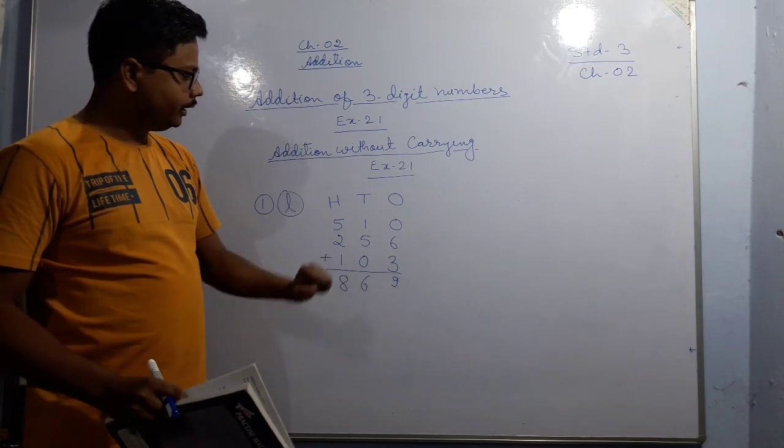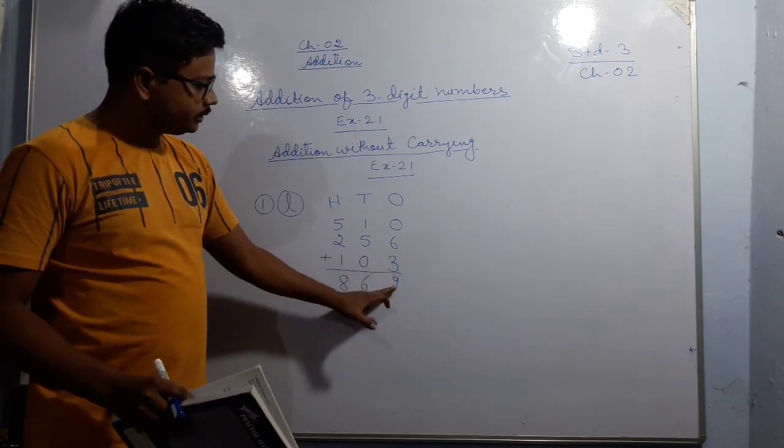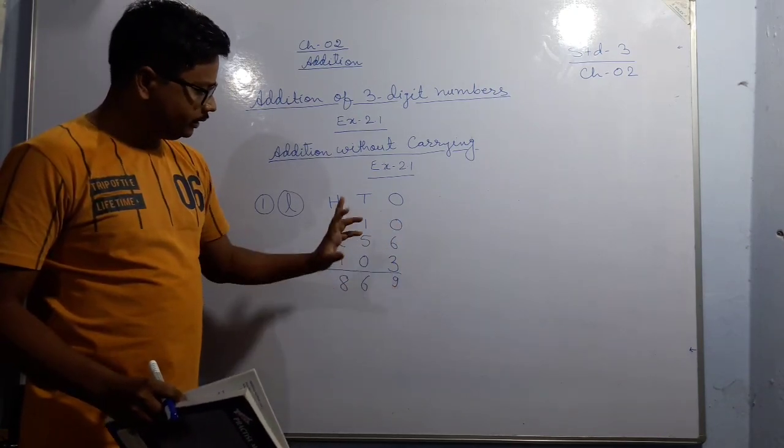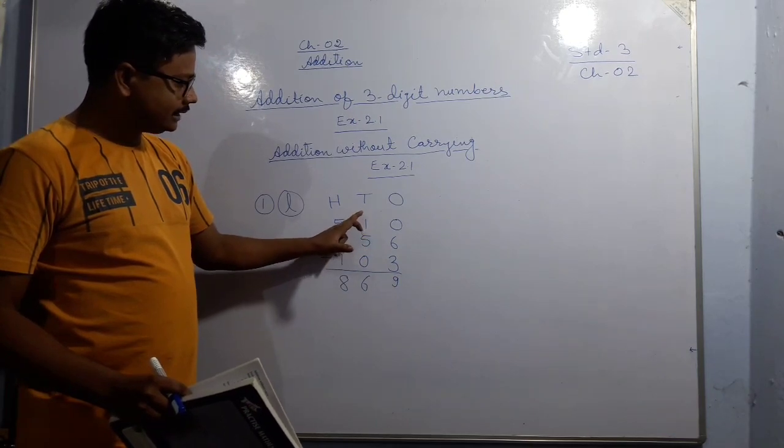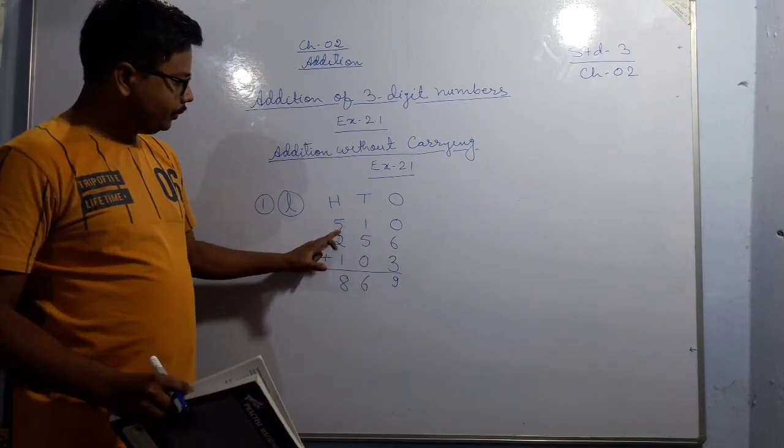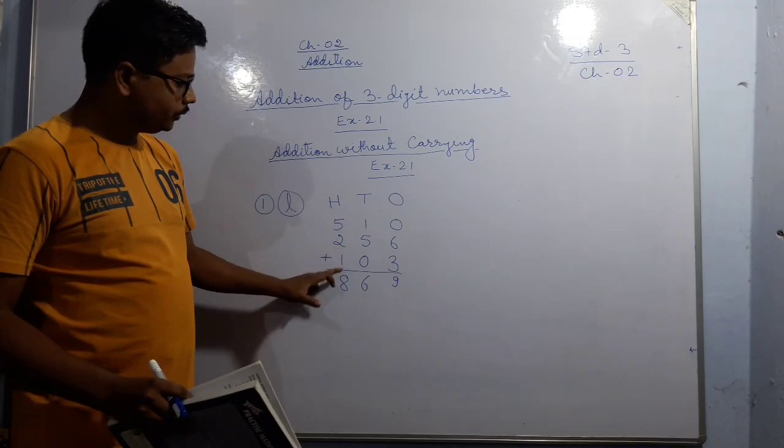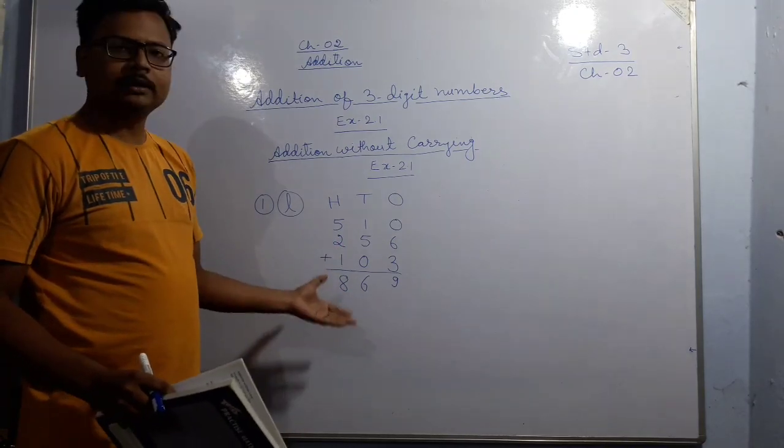Now 6 + 3 = 9, 9 + 0 = 9. 5 + 1 = 6, 6 + 0 = 6. 5 + 2 = 7, 7 + 1 = 8. As you can see, this is very simple and we do not need any carry in this question.